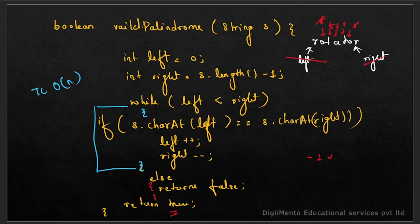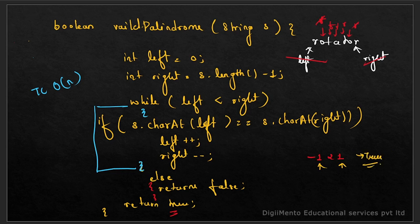Another example is '-121'. Someone might say it's not a palindrome because of the minus sign, but if the condition says to ignore the minus sign, we set left to point at '1' directly and skip the minus. In that case the answer is true. However, if we consider the minus sign, then '-121' is false because the minus doesn't match '1'. So such conditions in the question matter.